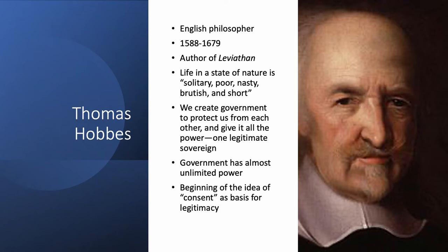Hobbes said we created government to protect us from each other. We gave it almost all power — except the power to take our own life, since we created it to protect ourselves. His Leviathan is a very, very powerful government with almost unlimited power. This is the beginning of the idea of consent of the governed: government, whether a monarchy or any other form, is based on the idea that we want something to protect us — we want order, peace, safety, and security.